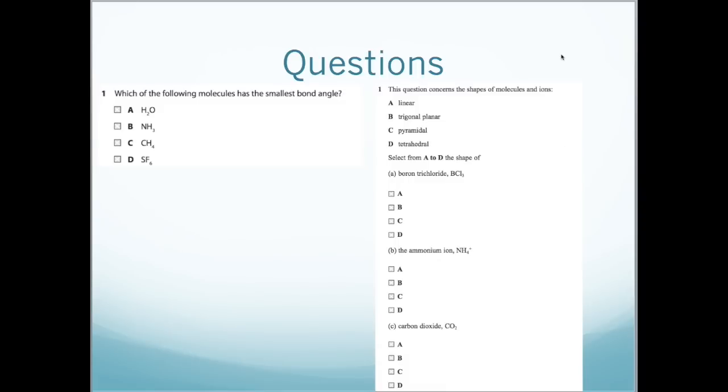This question concerns the shapes of molecules and ions. So A is for linear, B for trigonal planar, C for pyramidal, and D for tetrahedral. Select from A to D the shape of boron trichloride. We have three bonding pairs. The molecule will be trigonal planar, which is B.